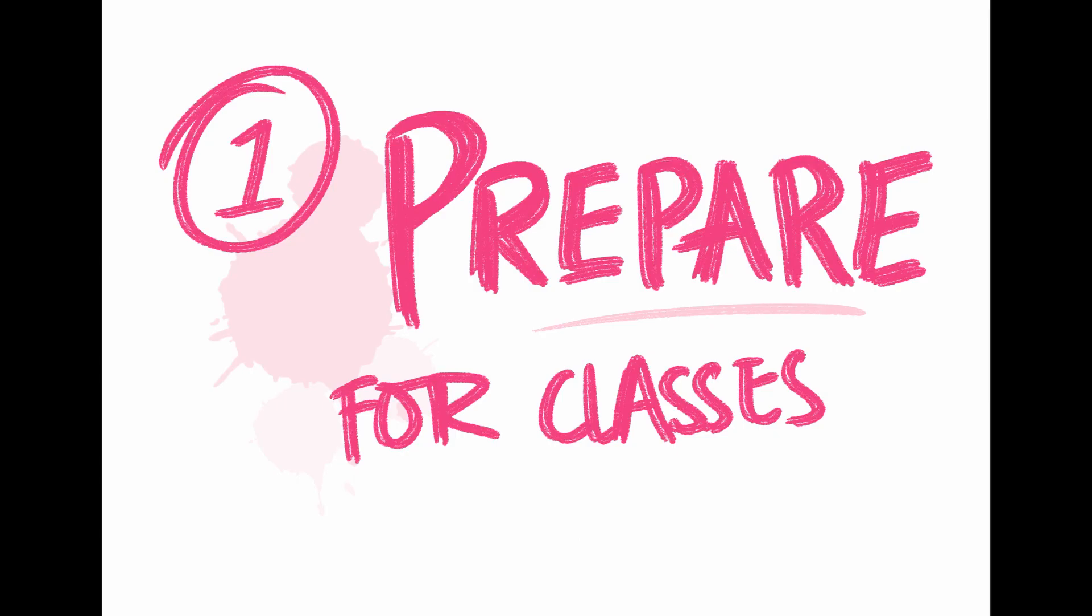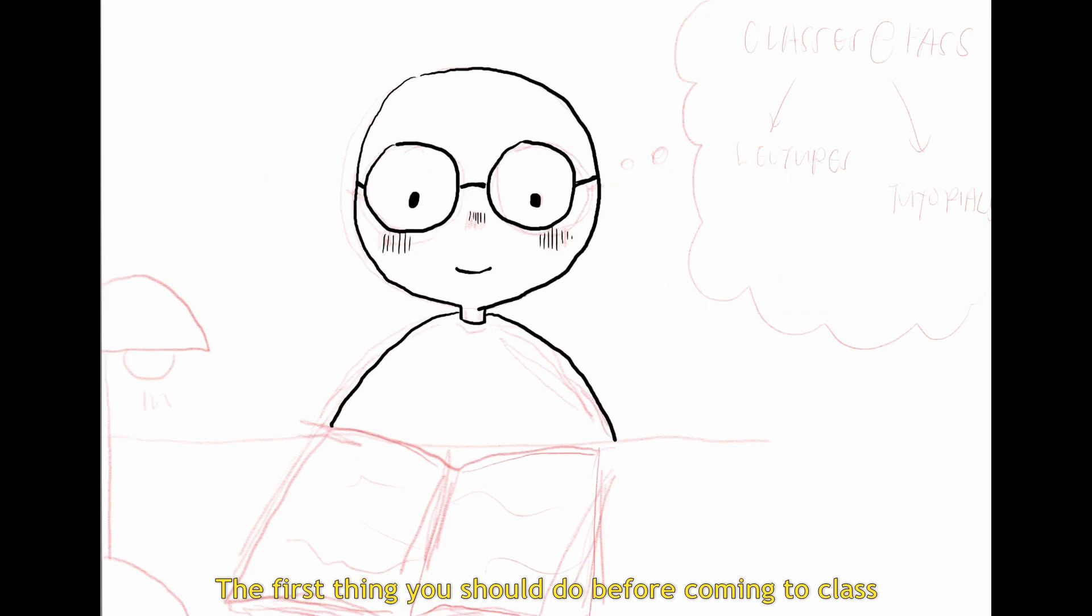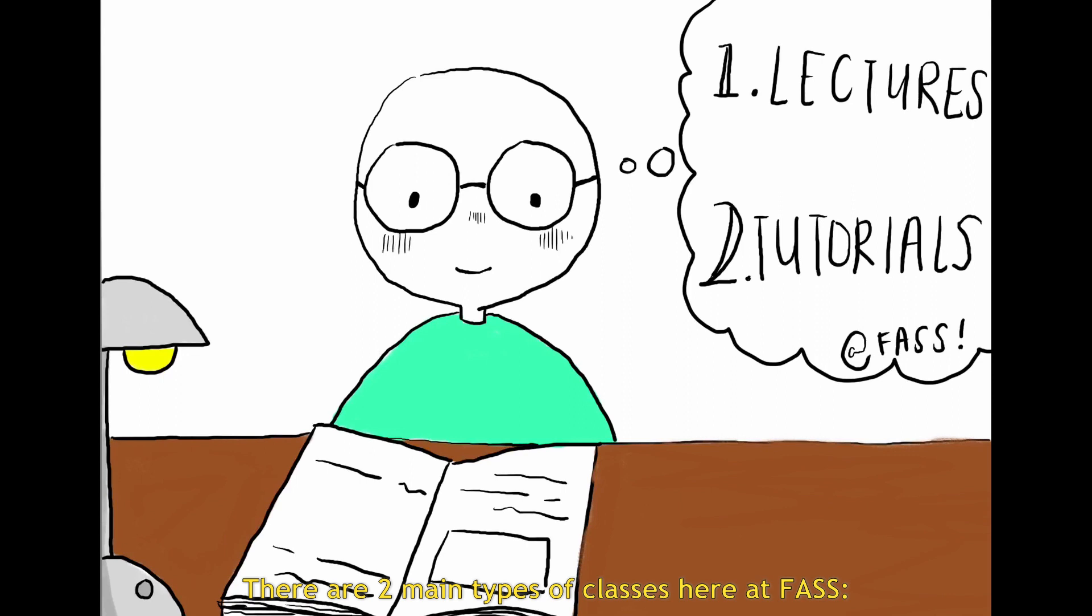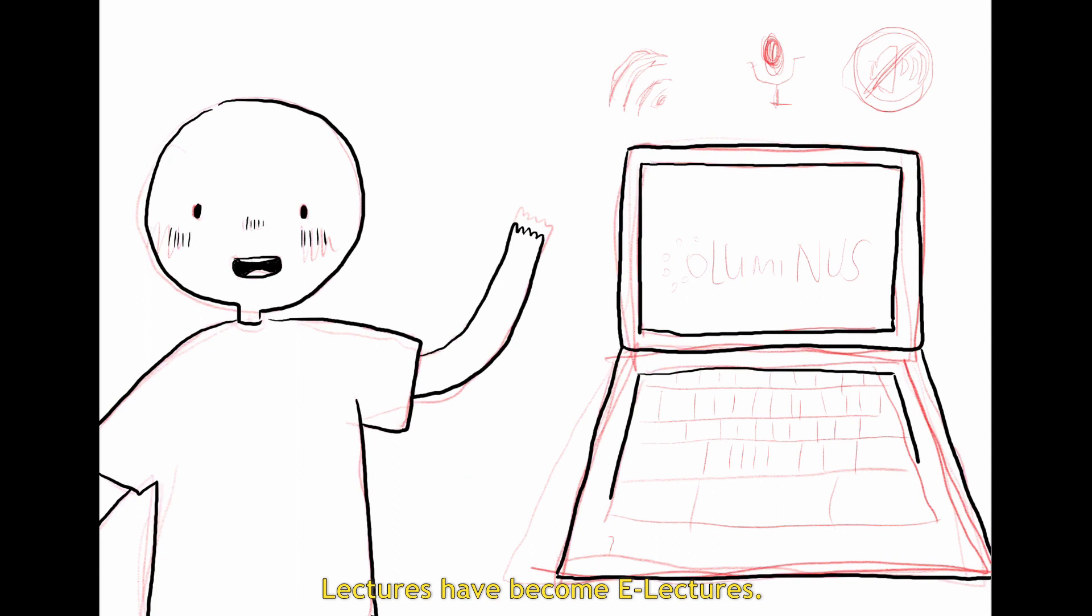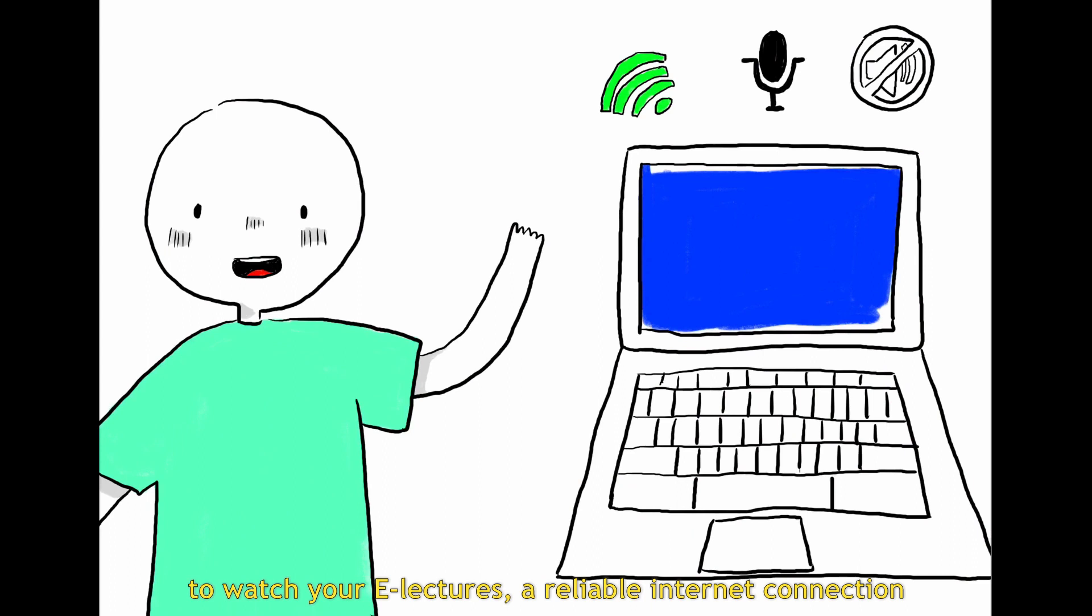Number one, prepare for class. The first thing you should do before coming to class is to prepare for it. There are two main types of classes here at FASS, lectures and tutorials. Because of COVID-19, lectures have become e-lectures. Thus, it is important for you to have a quiet and conducive space to watch your e-lectures, a reliable internet connection, an audible speaker and microphone.